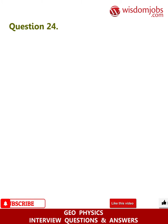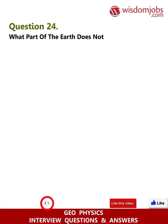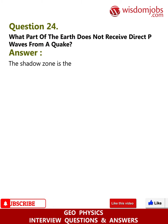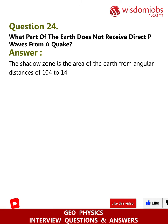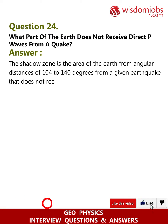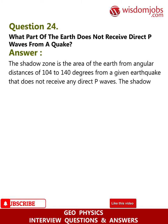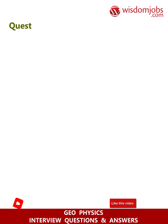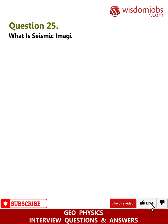Question 24: What part of the earth does not receive direct P waves from a quake? Answer: The shadow zone is the area of the earth from angular distances of 104 to 140 degrees from a given earthquake that does not receive any direct P waves. The shadow zone results from S waves being stopped entirely by the liquid core and P waves being bent (refracted) by the liquid core.